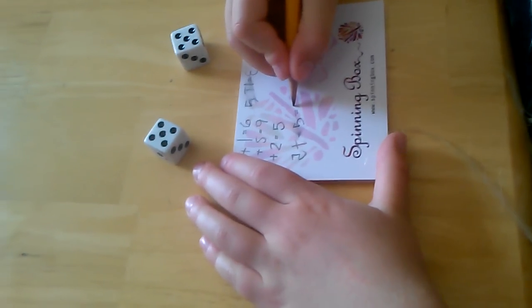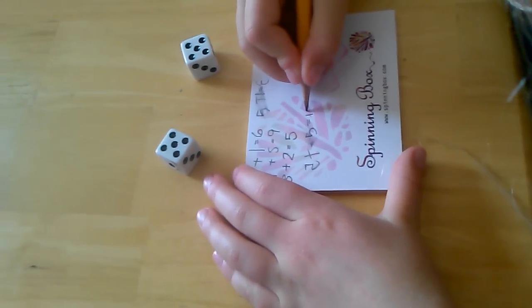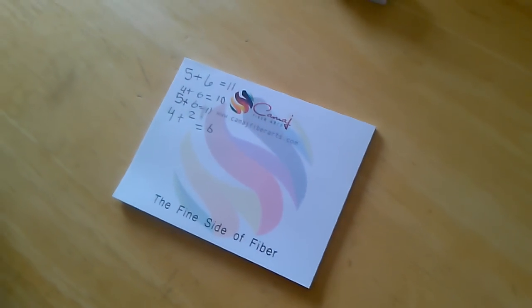I got six. Good job, okay, and that time Paige rolled a four and a two equals six, so who won that round? Me.